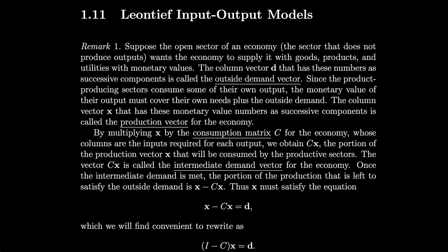Section 1.11, the Leontief Input-Output Models. Suppose the open sector of an economy, the sector that does not produce outputs, wants the economy to supply it with goods, products, and utilities with monetary values. The column vector d that has these numbers as successive components is called the outside demand vector. Since the product-producing sectors consume some of their own output, the monetary value of their output must cover their own needs plus the outside demand. The column vector x that has these monetary value numbers as successive components is called the production vector for the economy.